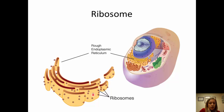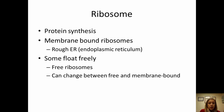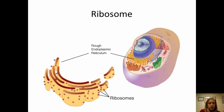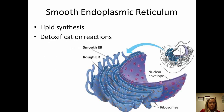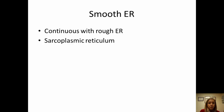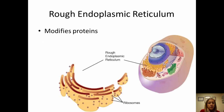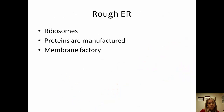Ribosomes are tiny dots found along the rough endoplasmic reticulum. They are the site of protein synthesis where proteins are made. Some ribosomes float freely, but most are attached to rough ER. Smooth ER is continuous with rough ER — it makes lipids or fats and helps with detoxification reactions. The rough ER modifies the proteins made in ribosomes and also helps manufacture membranes.